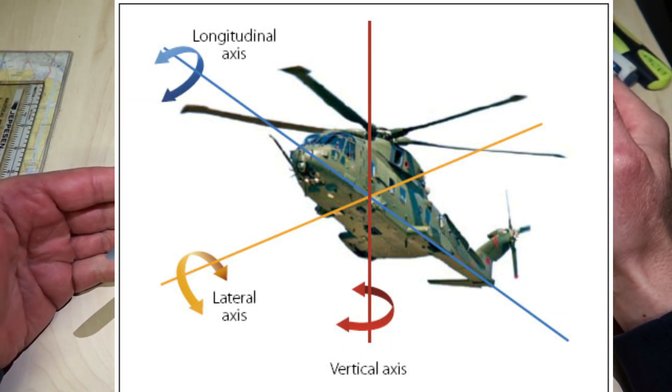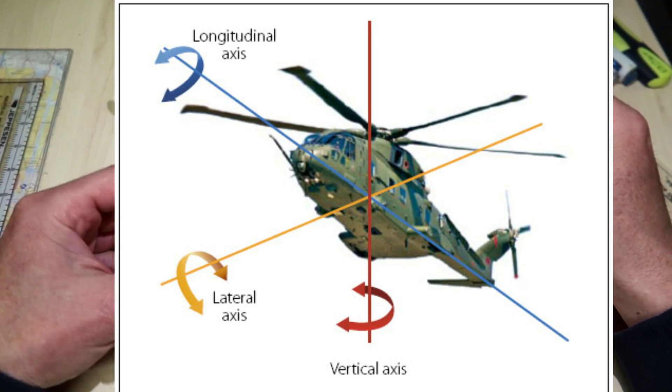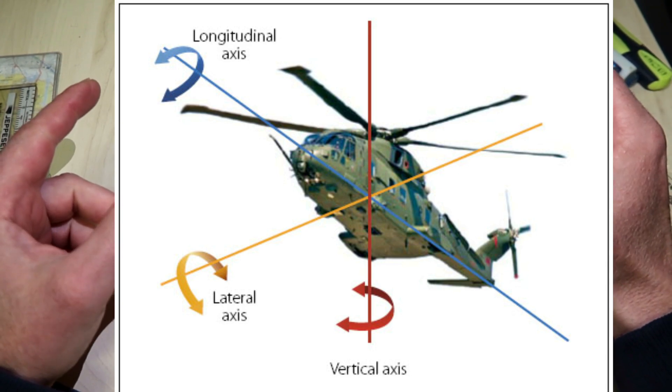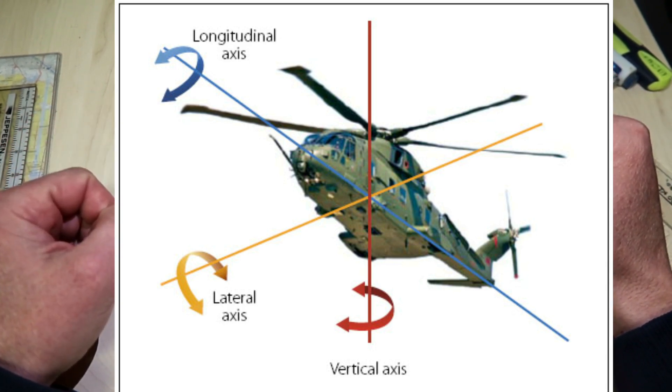The side-to-side axis is called the lateral axis. Stability about this axis is called longitudinal stability.